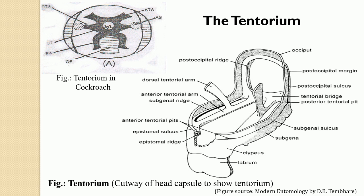The Tentorium serves to strengthen the stomodium — giving strength to the stomodium and the overall head capsule is its prime function. Along with that, the Tentorium is also responsible for providing a site of attachment for the various kinds of muscles coming from the different parts of the body.